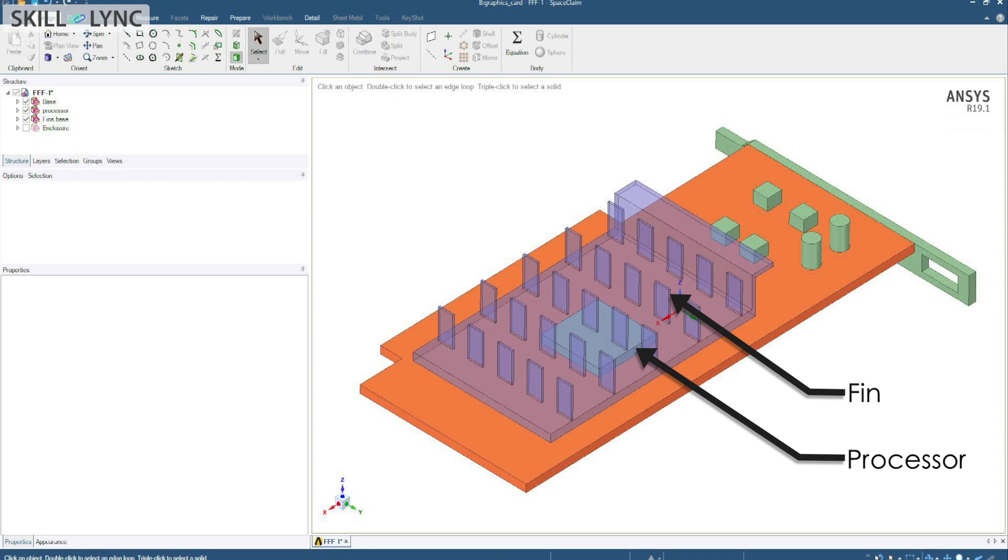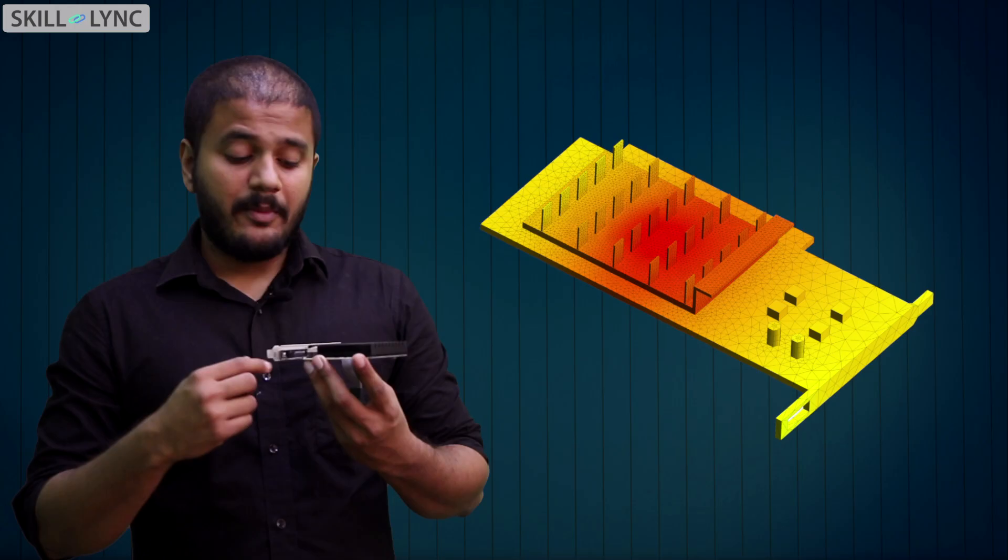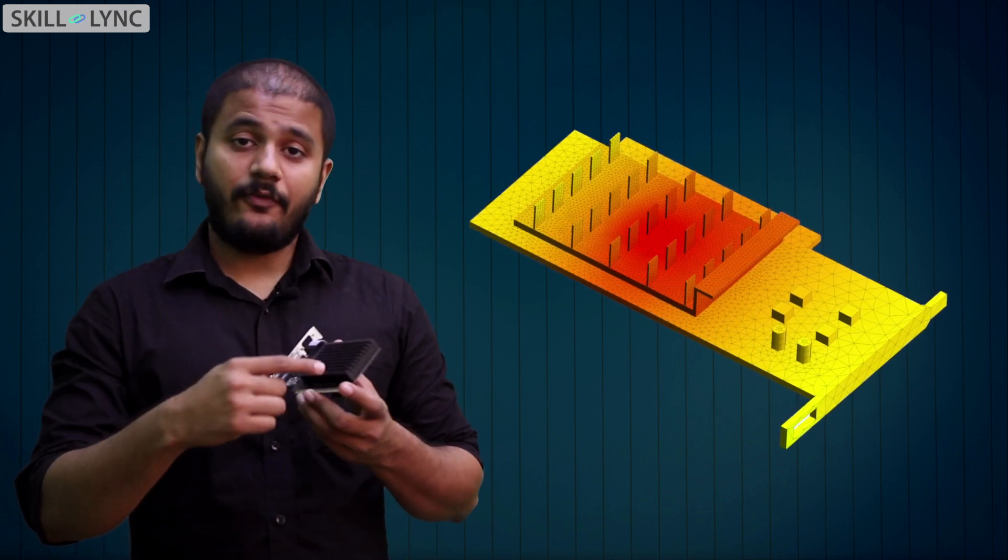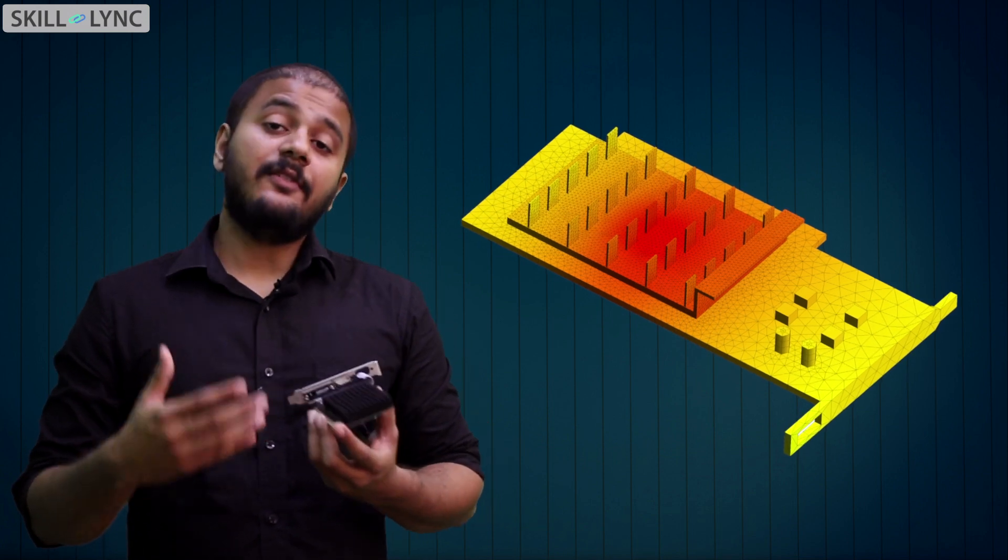In this particular graphics card, you might not see this, the processor is actually underneath the fin. We will be showing you a computer model of the same graphics card where you can see that. But this processor heats up a lot, and hence we need this large fin to cool the processor down. In this particular case, the fins actually help the processor maintain a safe temperature by increasing the available surface area for heat transfer.